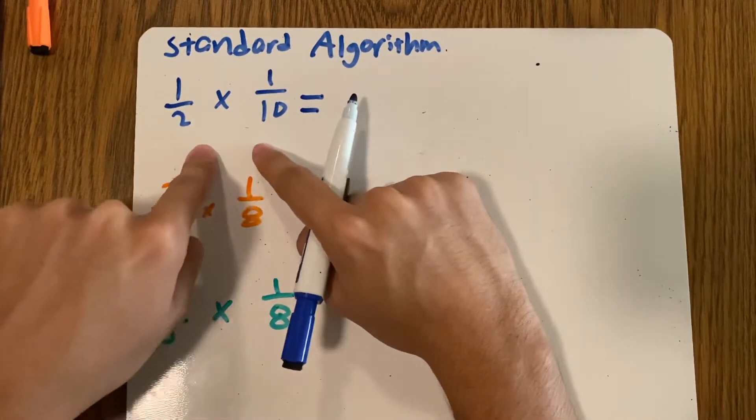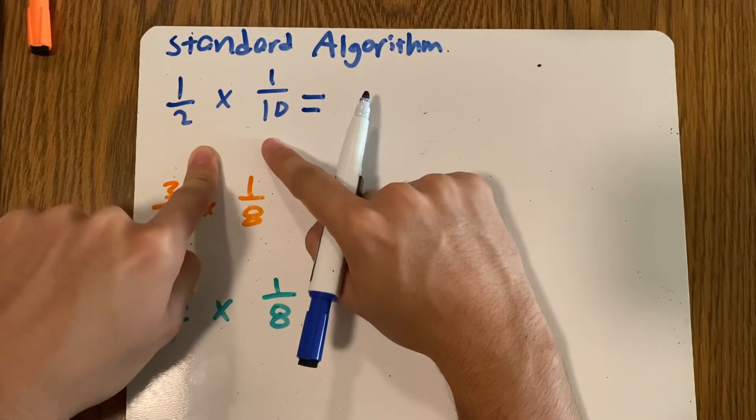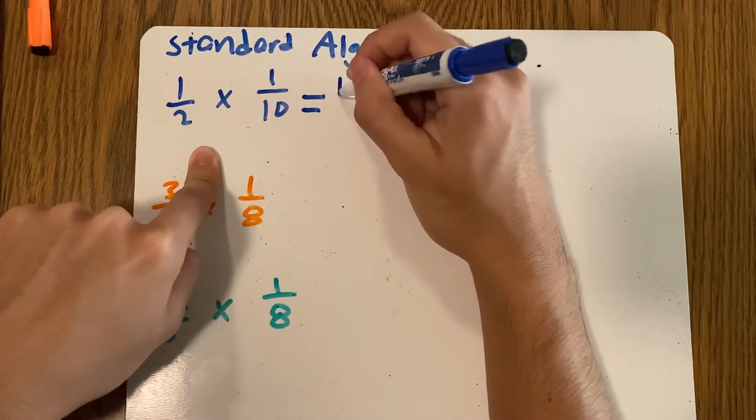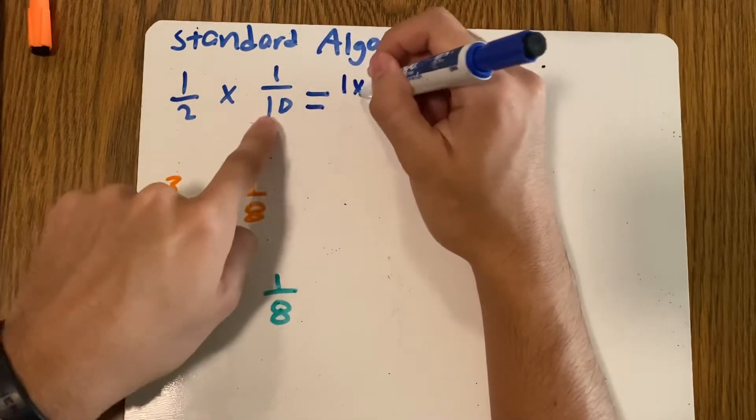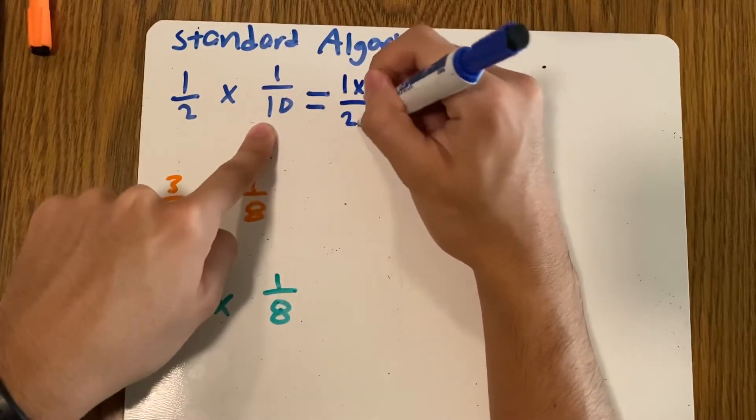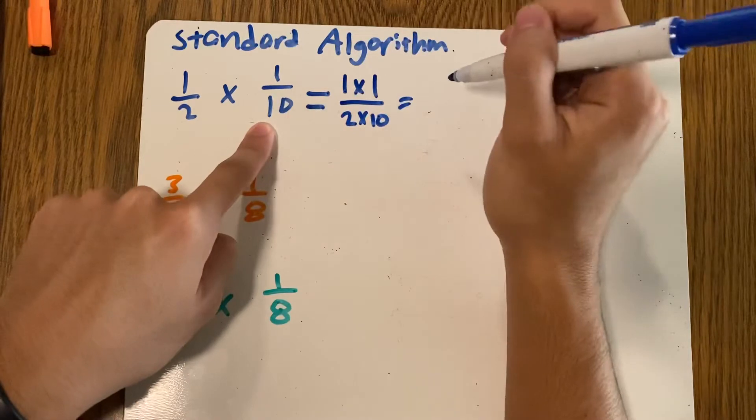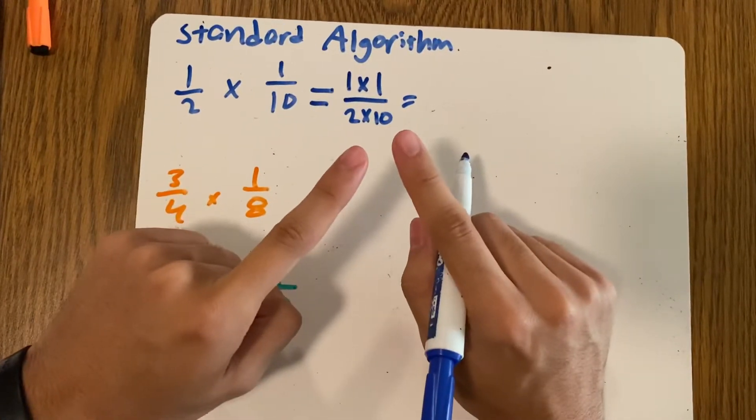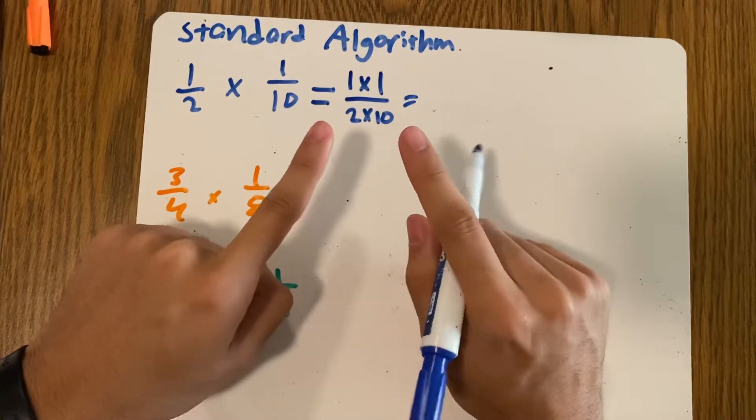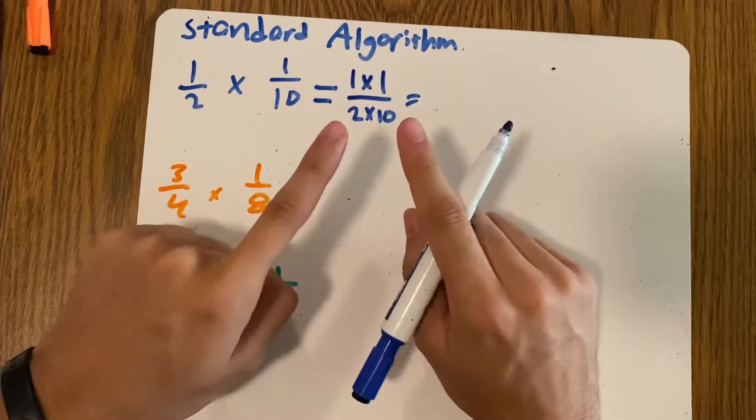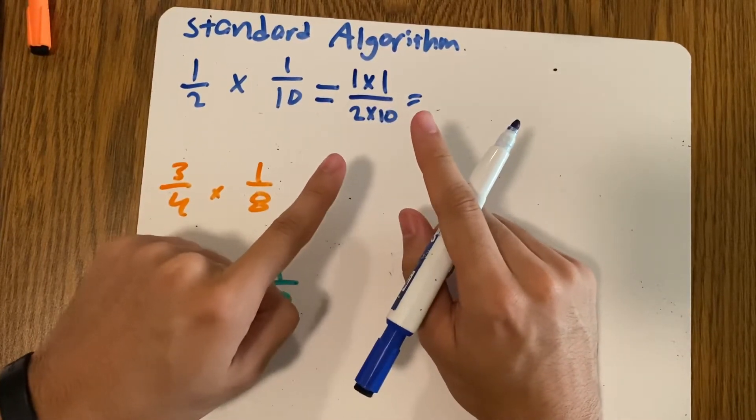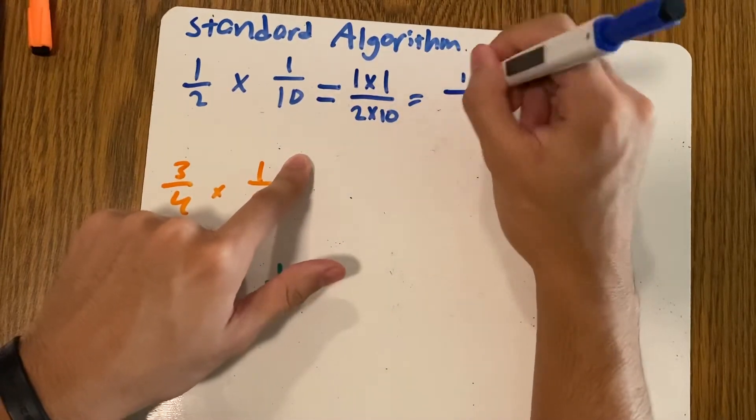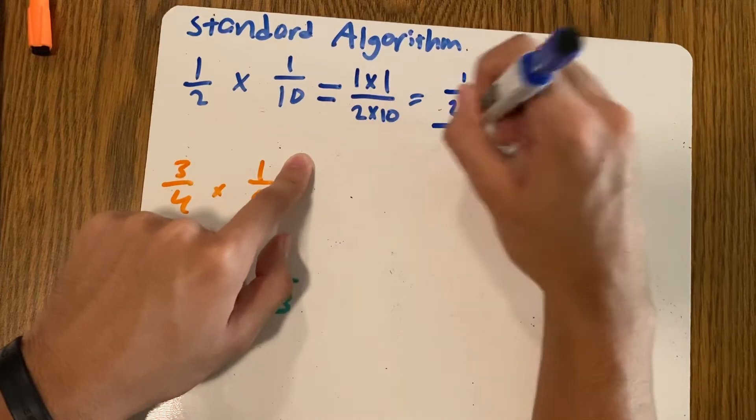When you're dealing with fractions and you're multiplying them, you can just multiply them straight across. This is what I mean: one times one, two times ten. You do not have to make them the same denominator. You only make them the same denominator when you have to add or subtract them. Got it? Capiche? All right, capash, good.